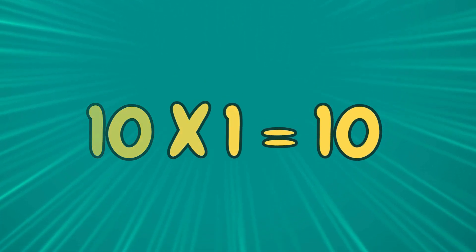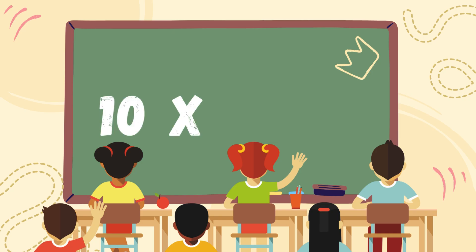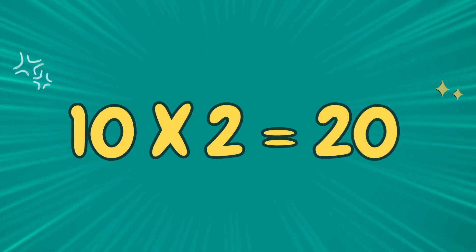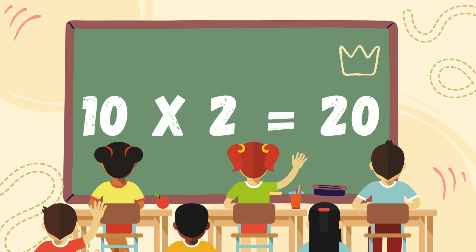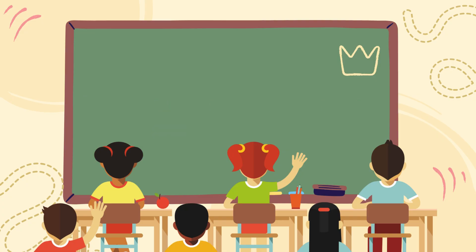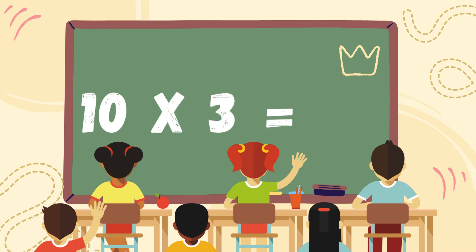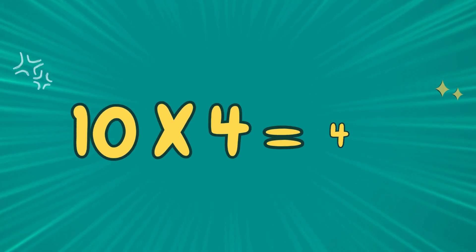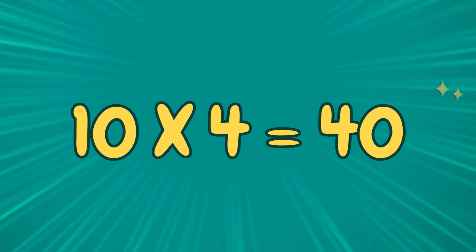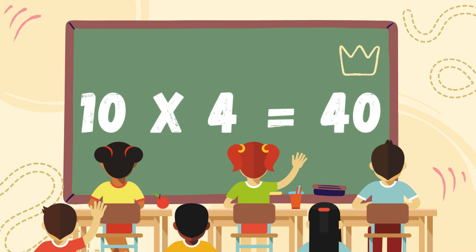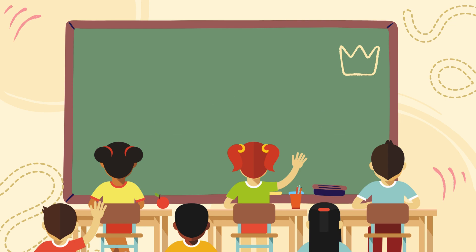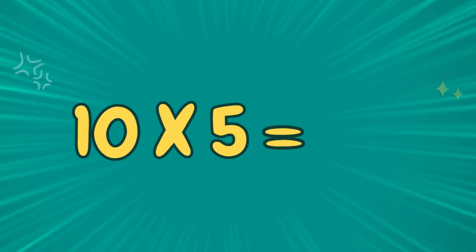Ten ones are ten. Ten twos are twenty. Ten threes are thirty. Ten fours are forty. Ten fives are fifty.